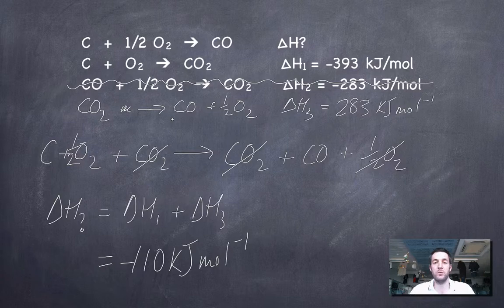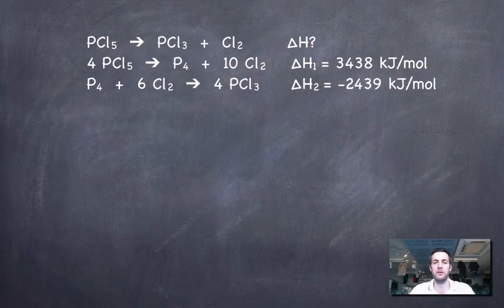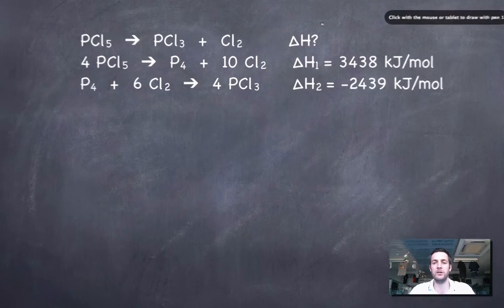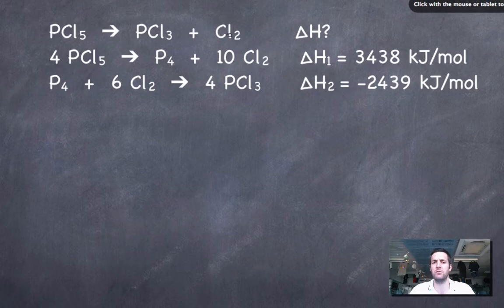Let's go on to the slightly more complex example, and this was the one involving PCl5 and PCl3. Again, in my unknown equation here, I've got PCl5 on the left, PCl3 on the right, and chlorine on the right. Here I've got PCl5 on the left, which is good. I've got P4, which isn't involved in this equation, and Cl2 is on the right, which is good. So I'm going to leave this one the same way round.